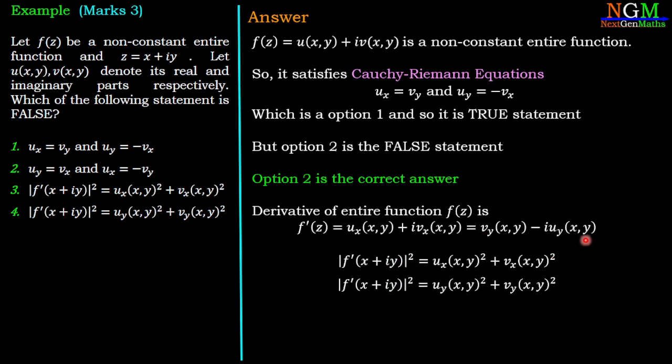From the second result, |f'|² = u_y² + v_y². Which are options number three and four. So options three and four are true statements. There is only one false statement which is option number two, and option number two is the correct answer.